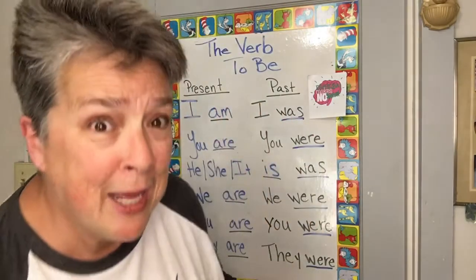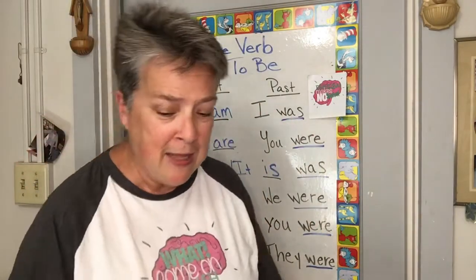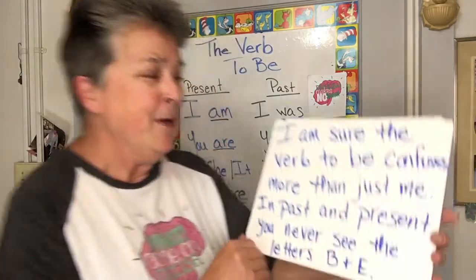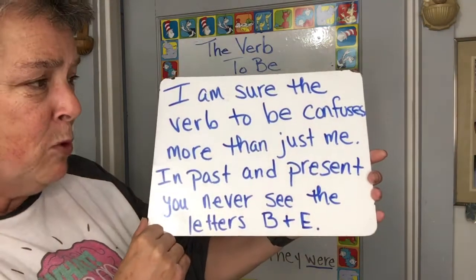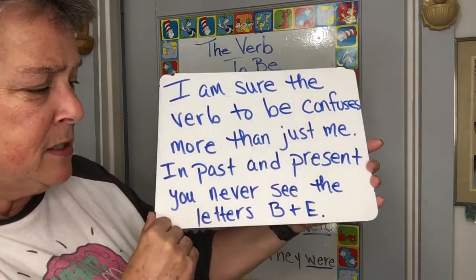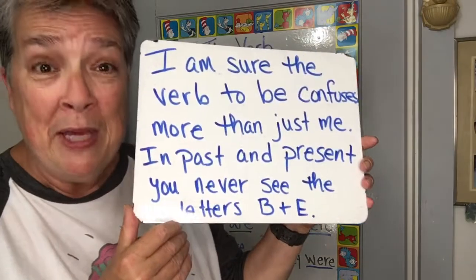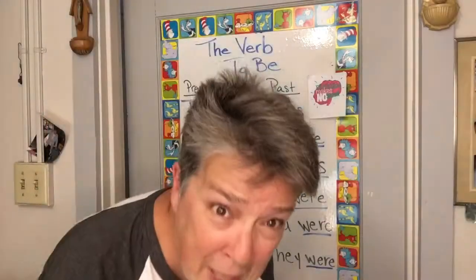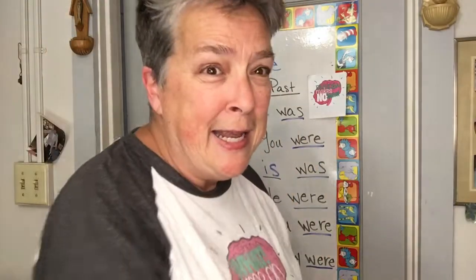Now you can read and understand these sentences, I hope. I am sure the verb to be confuses more than just me. In past and present, you never see the letters B and E. What? Come on, English!